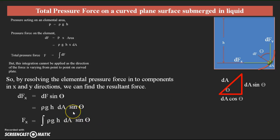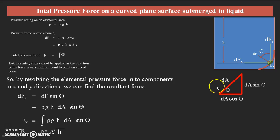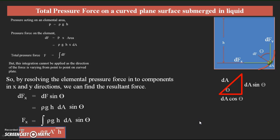We assume dA·sinθ as a particular area in the form of a vertical plate, and h remains as is. The integration of h·dA becomes the moment of area — that is, the location of the center of gravity. So we can write Fx = ρg·A'·h̄, where the integration h·dA = A'·h̄. Here dA·sinθ is assumed as A', the projected area of the curved surface, and h̄ is the distance of the center of gravity of this vertical projected plate from the free surface of the liquid.